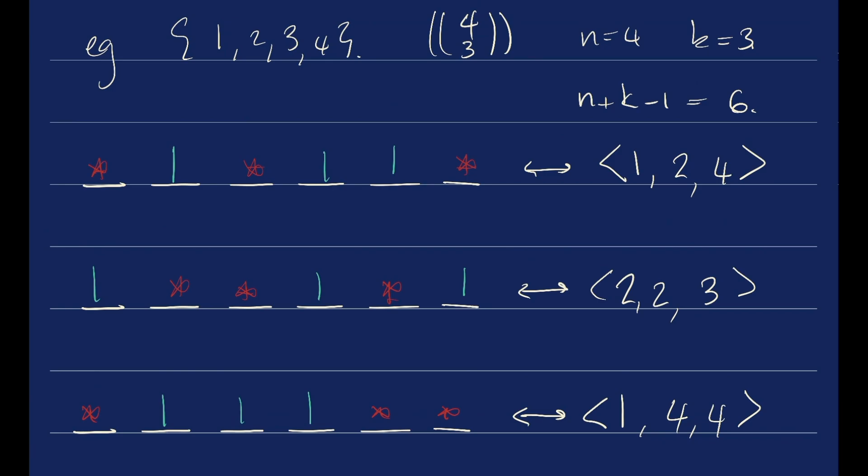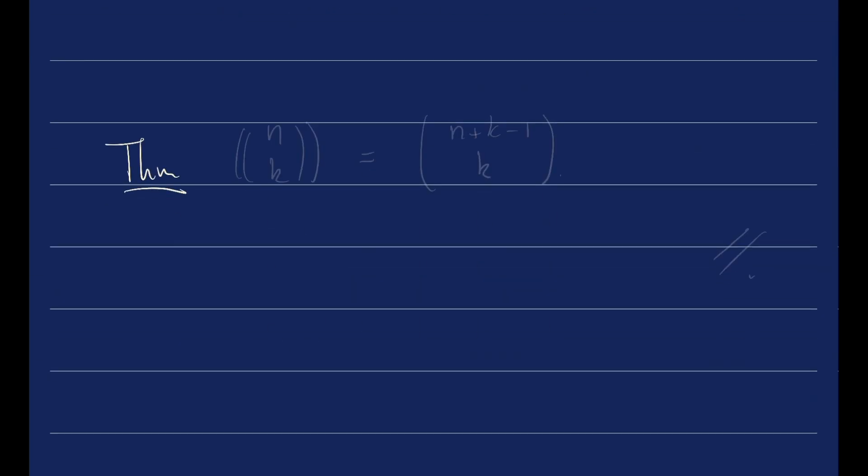This gives us a theorem. We want to figure out n multi-choose k, and it's equal to taking n plus k minus 1 objects and choosing k of them to be stars and the rest to be bars.